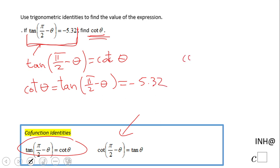Anything is a problem? Very fast. Cotangent of theta in this case is nothing else than negative 5.32. That's it.